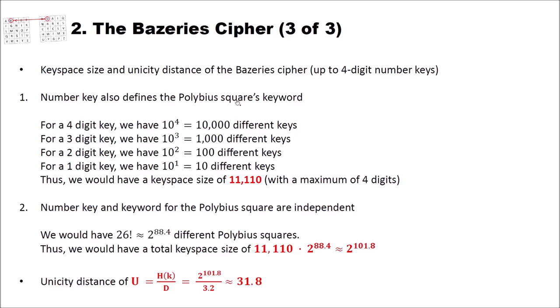For a three digit key, we have 1,000 different keys. For a two digit key, we have 100. And for a one digit key, we have only 10 different keys. We have to add all these possibilities, that we would have a key space size of 11,110 keys with a maximum of four digits.